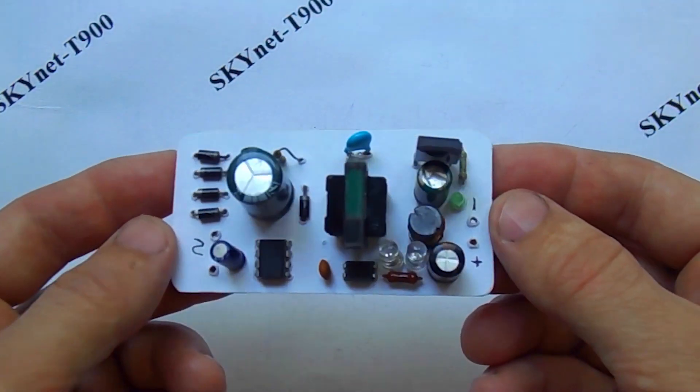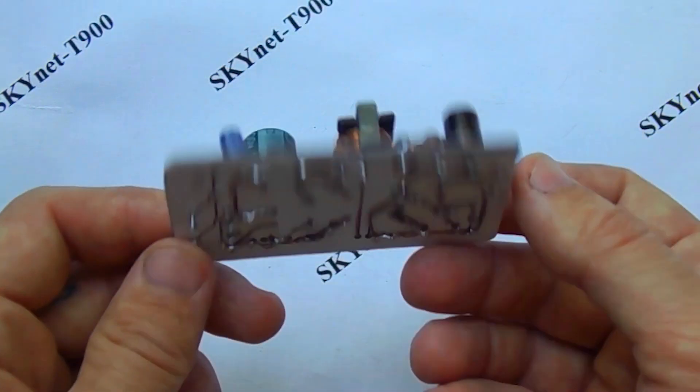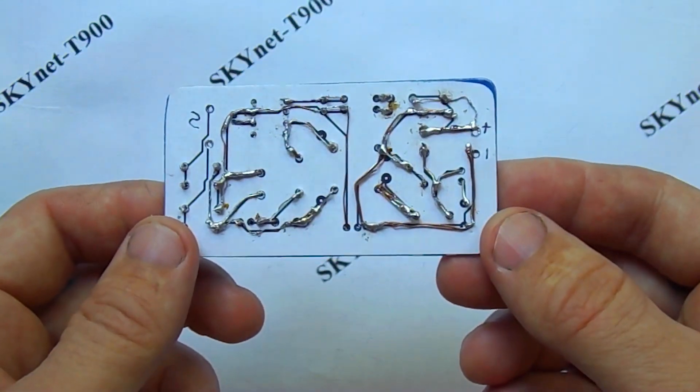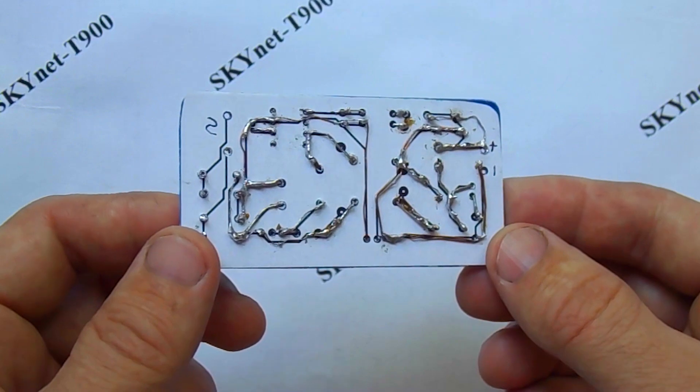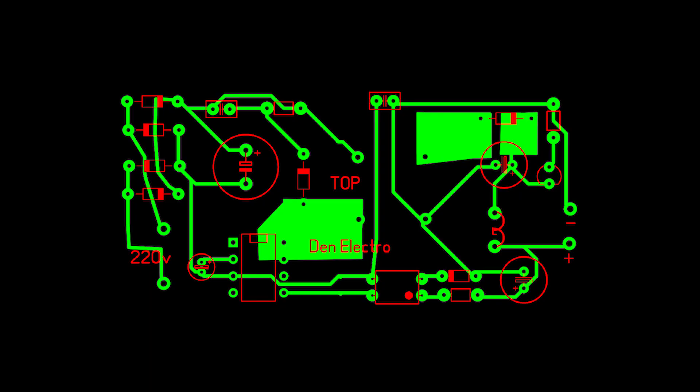For the power supply, I made the wiring in the layout program. I printed it out on a printer, pasted it on cardboard and got a board. I made holes with a needle, inserted the parts there and connected them with jumpers. A link to the project with the layout of the board will be in the description.